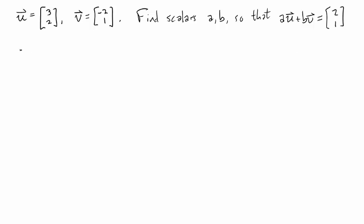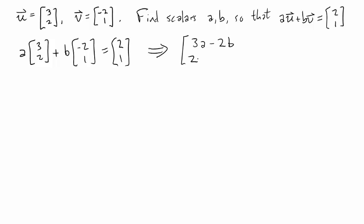Let's start by writing down that equation with the actual vectors. a times 3, 2 plus b times minus 2, 1 is equal to 2, 1. By re-expressing this left-hand side using simple vector scalar multiplication and vector addition, we can re-express that as a vector with components 3a minus 2b and 2a plus b.